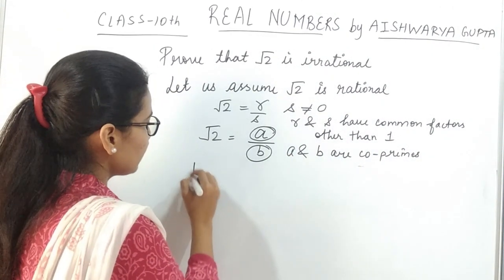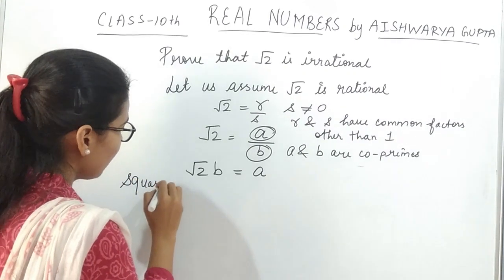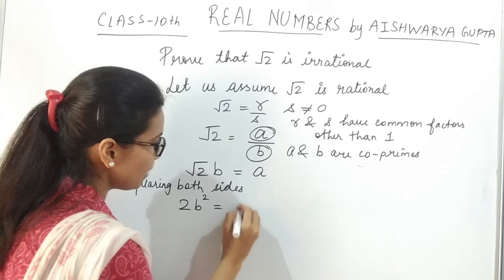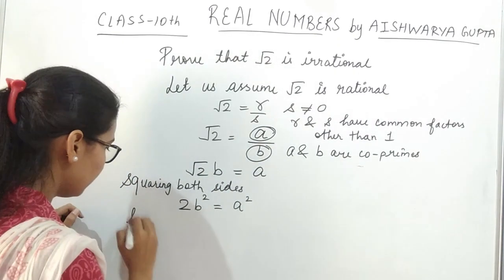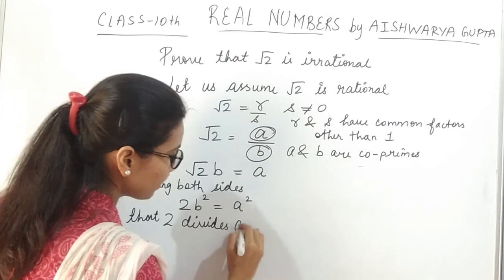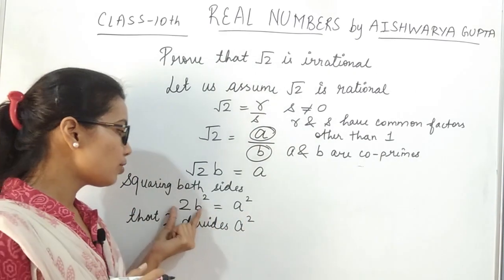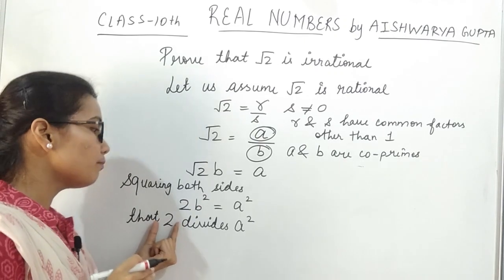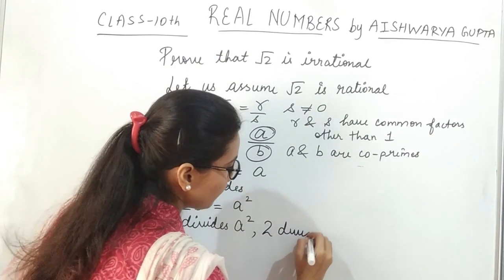Now we can write root 2 times B is equal to A. Squaring both sides, we get 2B squared equals A squared. This means that 2 divides A squared. By the theorem we studied previously, if any prime number divides A squared, then that prime number also divides A. So here we can say that 2 divides A.